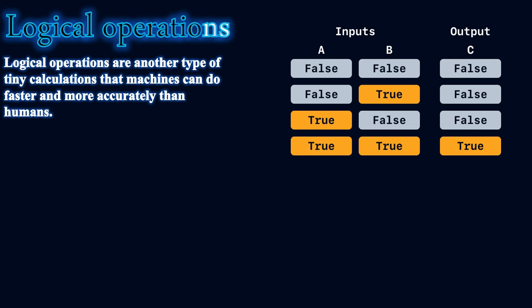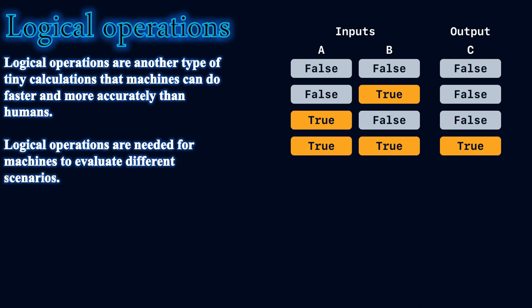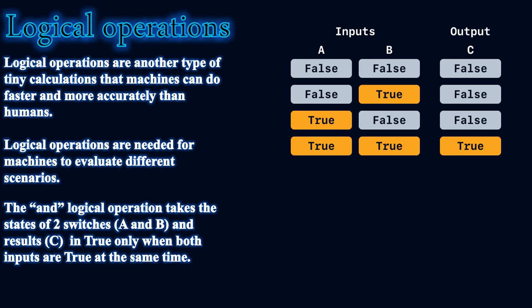Logical operators are another type of tiny calculation that machines can perform faster and more accurately than humans. Logical operations are needed for machines to evaluate different scenarios. The AND logical operation takes the state of two inputs A and B, and the output C is true only when both inputs are true at the same time. If A is false and B is false, C is false. If A is false and B is true, C is false. If A is true and B is false, C is also false. Only when both A and B are true does C return true.